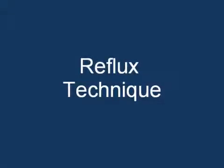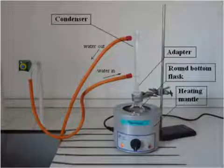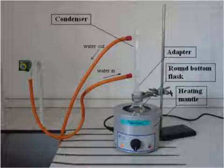The technique of refluxing is used when a reaction needs to be heated at a boiling point for more than a few minutes. The reflux apparatus consists of a condenser attached to a reaction vessel, usually a round bottom flask.